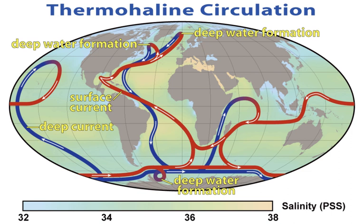However, modern instrumentation shows that current velocities in deep water masses can be significant, although much less than surface speeds. In general, ocean water velocities range from fractions of centimeters per second in the depths of the oceans to sometimes more than one meter per second in surface currents like the Gulf Stream and Kuroshio. In the deep ocean, the predominant driving force is differences in density, caused by salinity and temperature variations — increasing salinity and lowering the temperature of a fluid both increase its density.